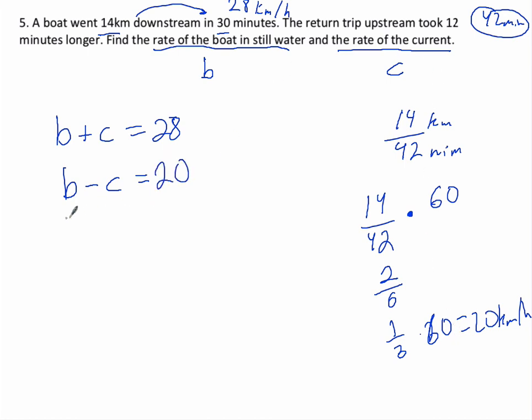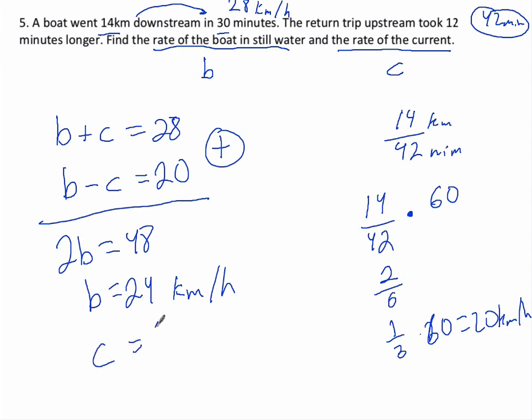And then we get these nice little simultaneous equations, which are pretty easy to solve. I can add these together, and I get 2b equals 48. b equals 24 kilometers per hour. So that's the speed of the boat. And the current is, we have to add up to 28, so the current is 4 kilometers per hour.